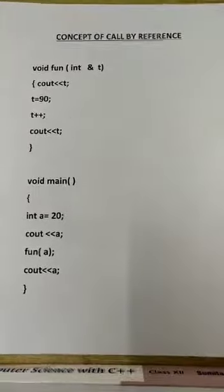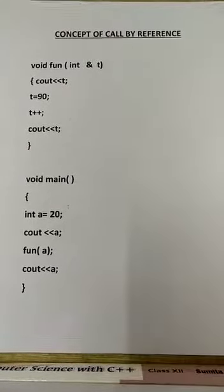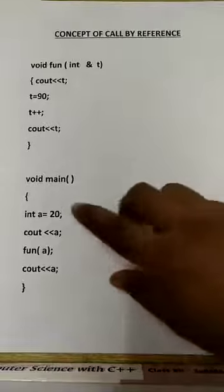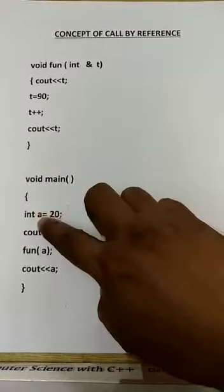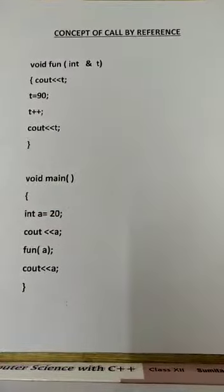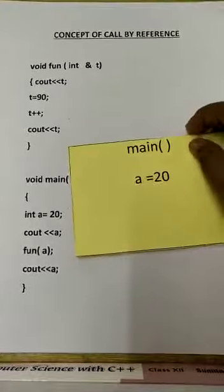We will understand with the help of a diagram. Whenever we execute the program, we always start with the body of main. So in the body of main, a variable is created, integer a with the initial value 20.